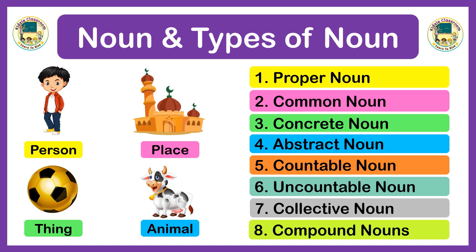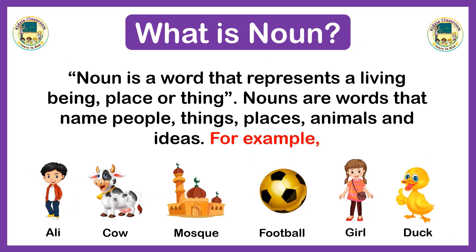Hi everyone, today we will learn an important part of speech — the noun. We will also discuss all types of nouns. First, let's understand what a noun is. A noun is a word that represents a living being, place, or thing. Nouns name people, things, places, animals, and ideas. For example, Ali is a living being; cow is also a living being and an animal; mosque is a place; football is a thing; girl and duck are also living beings.